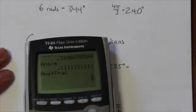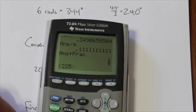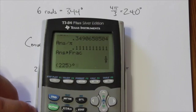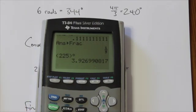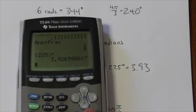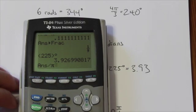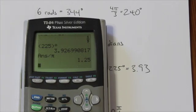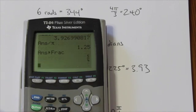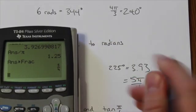Let's do that again with 225. Brackets, 225, close brackets. Go into the angle menu again and tell the calculator that that is a degree. Press enter and we get 3.93. I suspect I can do better than that, so I'm going to try dividing out the pi again. Dividing out the pi gives a much nicer decimal value. Converting that to a fraction: 5 quarters. So this angle measure is 5 quarters of pi — that is 5π over 4.